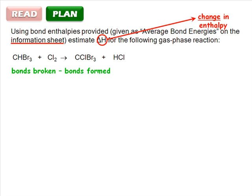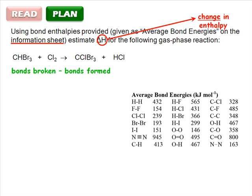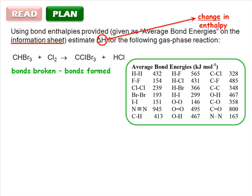To get the bond energies, pull out the datasheet. Inspect the reaction carefully, and you'll see that carbon-hydrogen and chlorine-chlorine bonds are broken. We look these two bond types up in the table and note their energies.